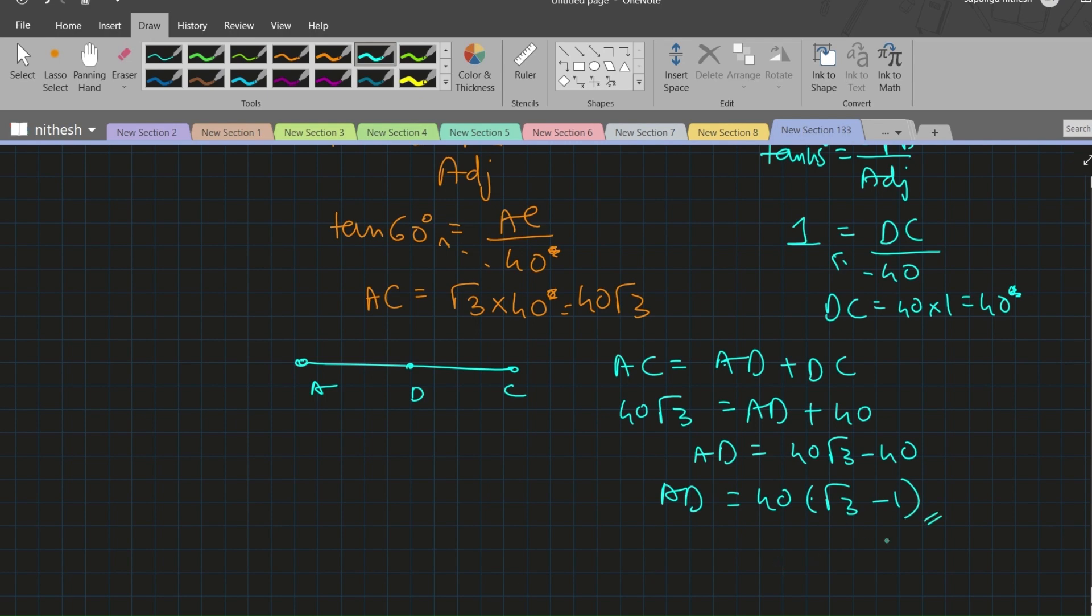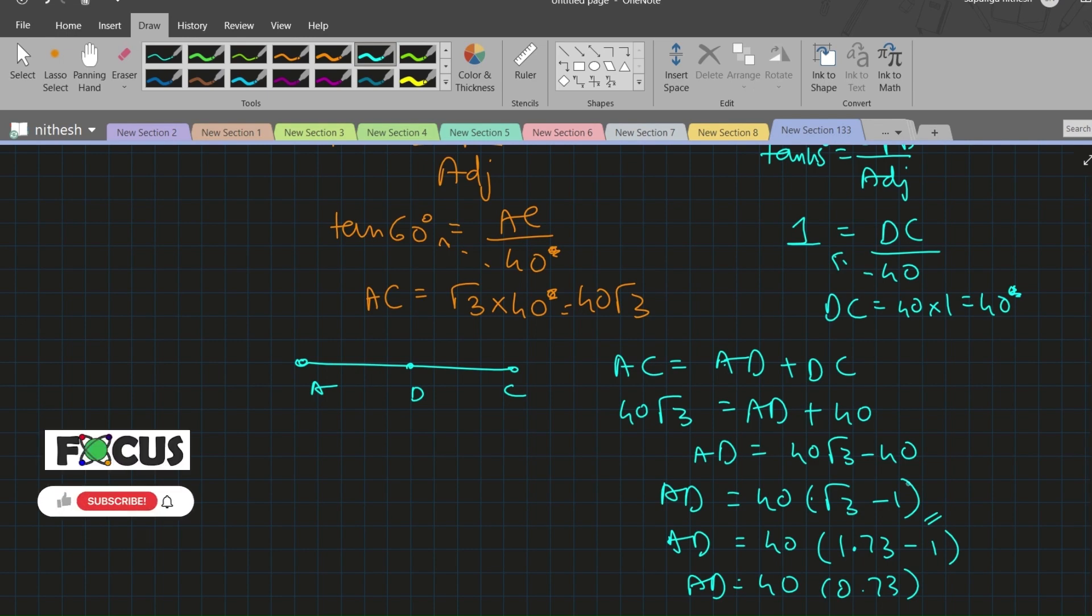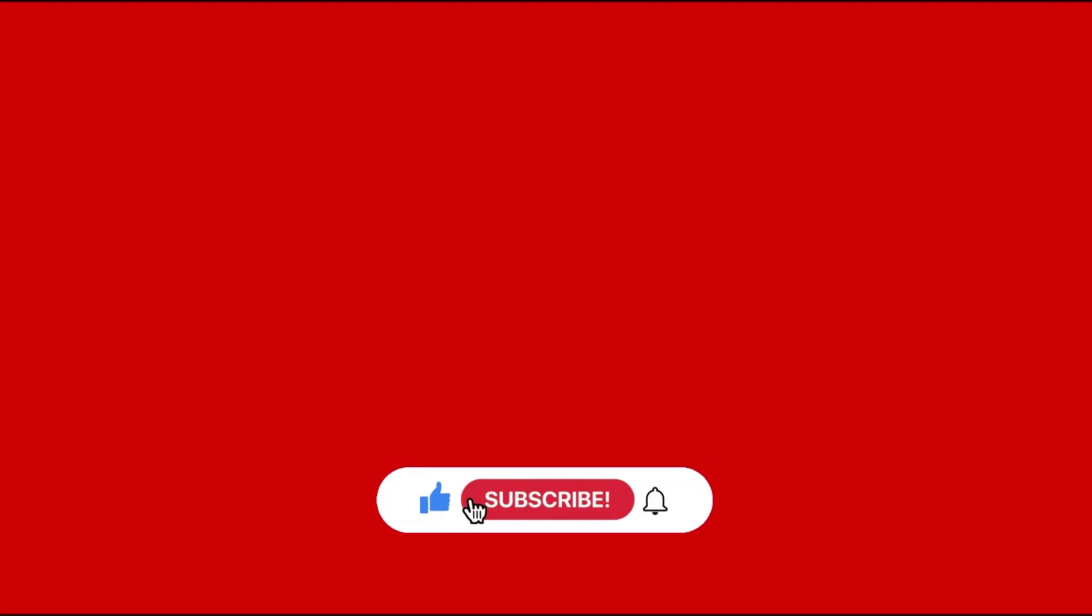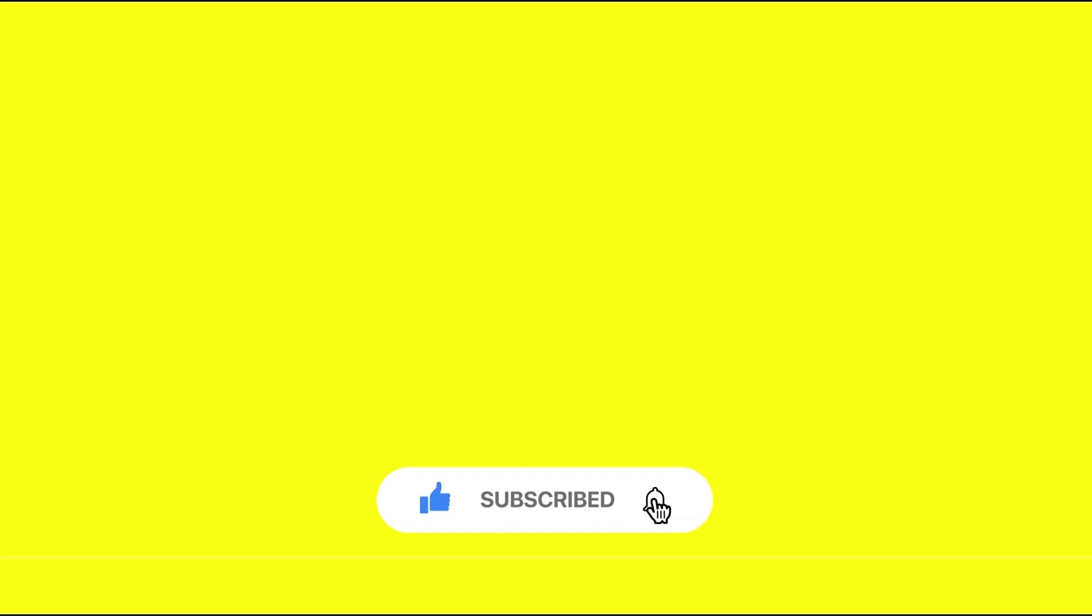We can substitute the value of √3 as 1.73, so 40(1.73 - 1) = 40 × 0.73. When you multiply 40 × 0.73, you get the answer as 29.2. If you like this video, please share and subscribe to our channel.